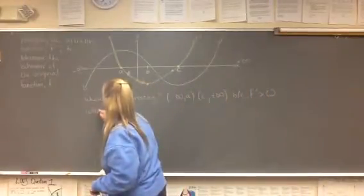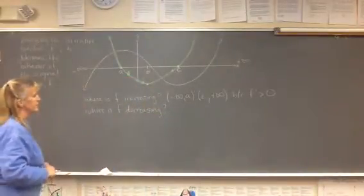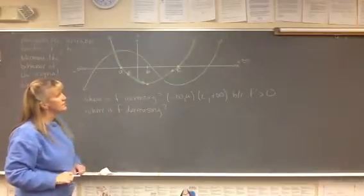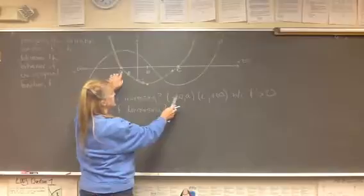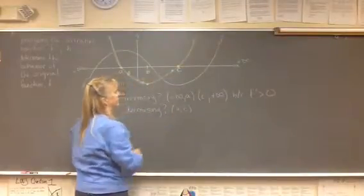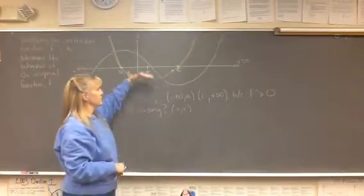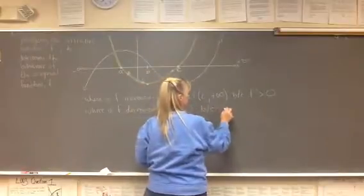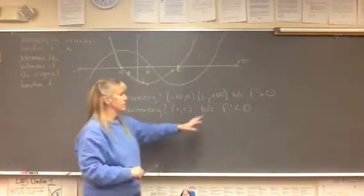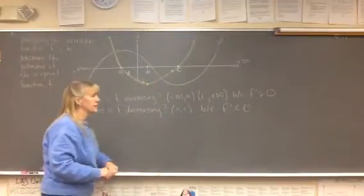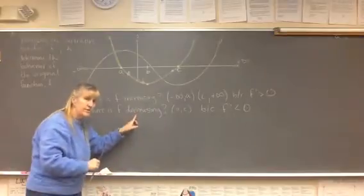Likewise, where is f decreasing? Function f decreases from this relative max all the way down to this relative min — that is on the interval between a and c. Look at the first derivative graph between a and c and notice that f prime is definitely below the x-axis there, because the first derivative is less than zero. A decreasing function is indicated when the first derivative or slope is negative — a negative slope means the function is going down or decreasing.